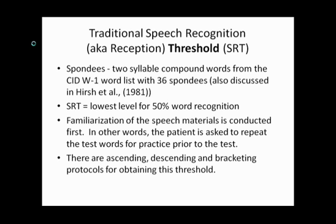The traditional speech recognition or reception threshold uses spondees — two-syllable compound words from the CID W1 word list with 36 spondees, also discussed in the Ira Hirsch 1981 paper. The SRT is the lowest level for at least 50% word recognition ability. Familiarization is conducted first: the patient repeats test words for practice — 'pancake,' 'baseball,' 'cupcake.' There are ascending, descending, and bracketing protocols for obtaining this threshold, and unfortunately there is no standardization for that procedure.